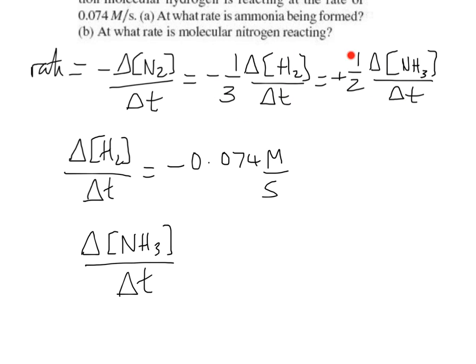We can take this half and multiply both sides by 2, and that will leave us delta NH3 delta T by itself. So that's minus a third times by 2 times by delta H2 delta T.